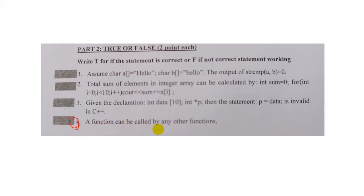A function can be called by any other function. In most programming languages, even if a variable has a restriction or permission restriction, in C++ programming a function can be called by any other function. In C++, the variable is a strict function - this is the second function.